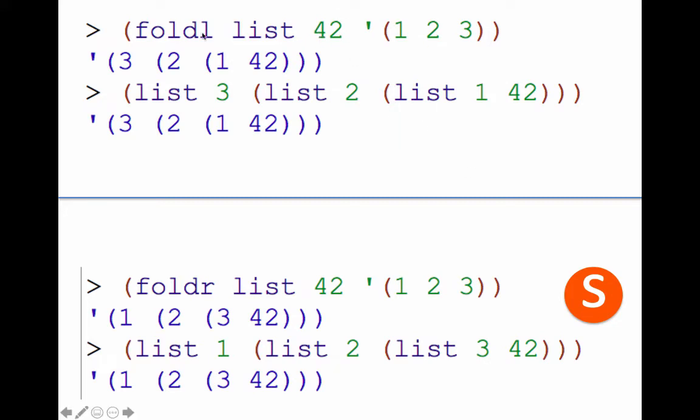So list, again, with foldl, we started with the first calculation was a call to list of 1 and 42. So there, 42 was the base case. Whereas with foldr, we started with 42 as the second argument and the last thing as the first argument. So we started with list 3 and 42.